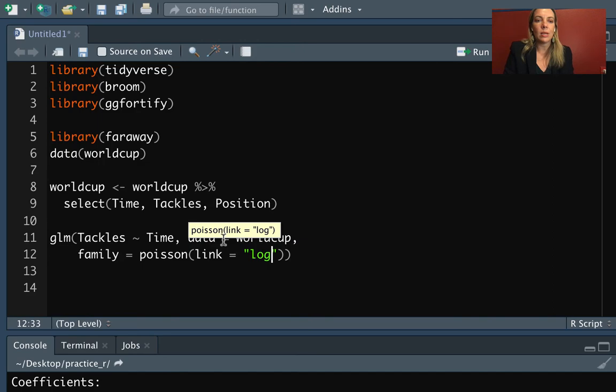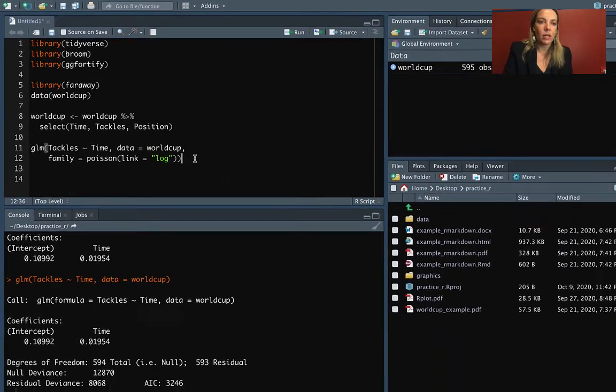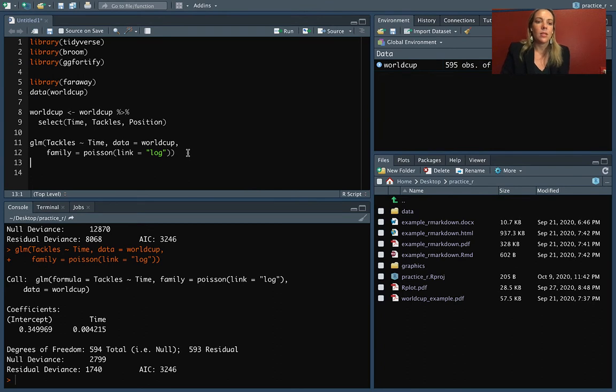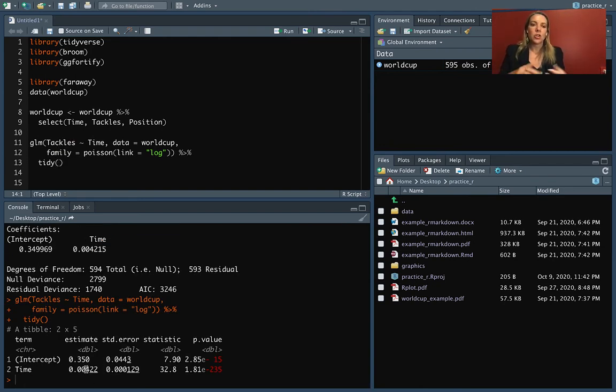This part actually we probably wouldn't need with Poisson because it's the default for Poisson to have a log link in R. So we can run that and we can get output in the same way. We can also use things like the tidy function from broom to get this output in terms of a tibble that we can use to work with a little bit more easily later.